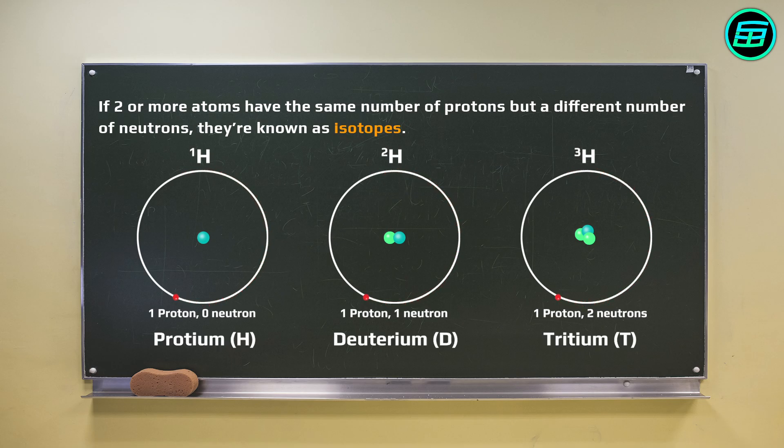Different neutron numbers give rise to the different masses of isotopes, since atomic mass depends on the number of protons and neutrons. In the case of hydrogen isotopes, protium's atomic mass is 1.01 Daltons, deuterium's mass is 2.01 Daltons, and tritium's is about 3.02 Daltons.